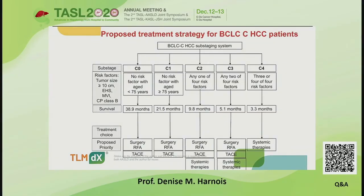Their proposed treatment strategy for BCLC stage C HCC patients was that C0 patients — no risk factors and age less than 75 — had a prognosis survival of 39 months, and they recommended surgery, RFA, or transarterial chemoembolization. For C1 patients — no risk factors but age greater than or equal to 75 years — survival was 21.5 months, and they again recommended surgery, RFA, or transarterial chemoembolization therapy.